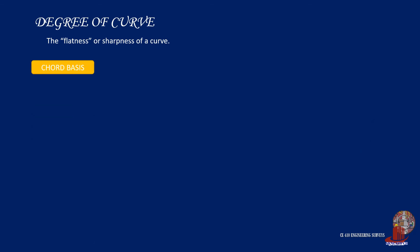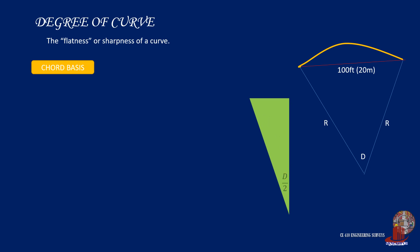The second method is chord basis, which takes the long chord of a degree of curve as 100 feet or 20 meters instead of the curve itself. Since it is possible now to create a triangle, we can work with trigonometry to relate the radius with a degree of curve. That is, the sine of half of D is equal to 50 feet upon R, giving R as 50 divided by sine of D all over 2. Same thing using metric units as 10 meters divided by sine of D all over 2.